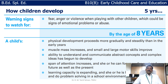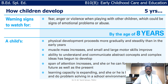The warning signs for five-year-olds include fear, anger, or violence when playing with other children, which could be signs of emotional problems or abuse. If the child is always fearful or angry when playing with others, these are serious warning signs. We should concentrate on these behaviors and talk to the child to help overcome these negative aspects of development.